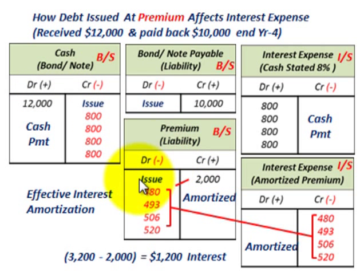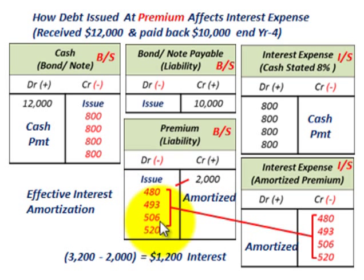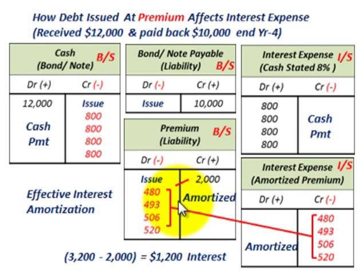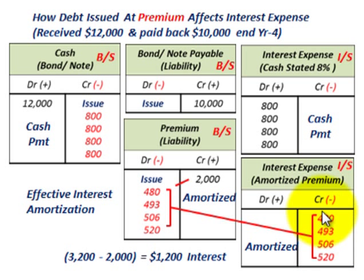We have to amortize this premium using the effective interest method, coming right off our amortization schedule. For each period, we credit or reduce our premium from $2,000 down to zero at the end of the fourth year — this represents the amortized amount of the premium each year. With our premium account, we have a debit amount, so we need a corresponding credit to interest expense on our income statement. You're reducing your interest expense through this premium amortization.